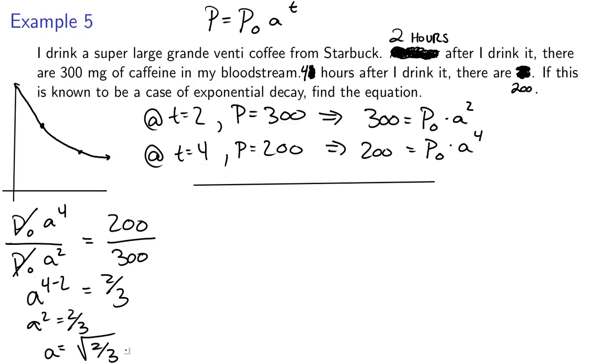So we're a lot closer than we used to be, we now know that our equation needs to look something like P equals P0, we still haven't figured out what P0 is yet, but P equals P0, A to the T, but now we know that A is the square root of two-thirds.